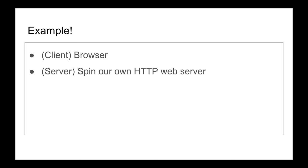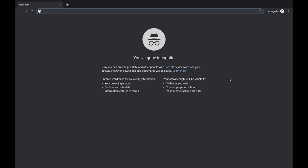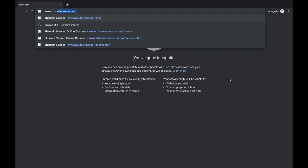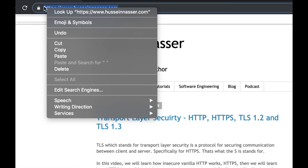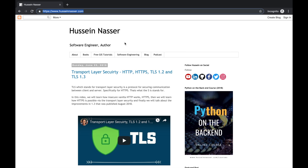Let's show some examples. We're going to show you the browser requests that are happening, and also how to spin up your own HTTP web server. I've opened Chrome in incognito mode — no caches — and navigated to hussainnasser.com. This is the request we made, and here's what we got back.